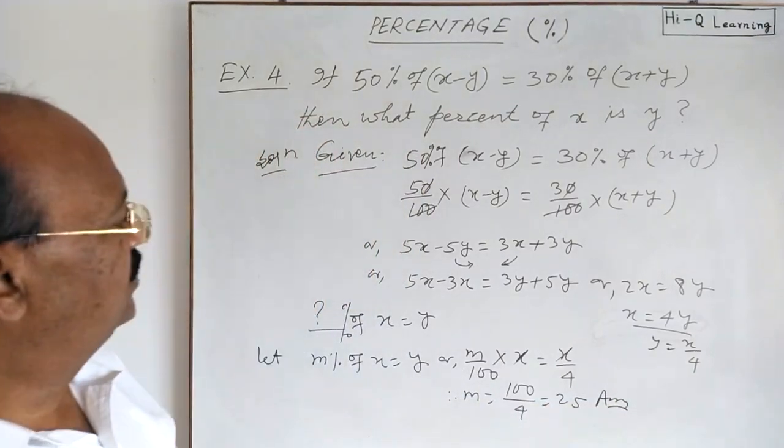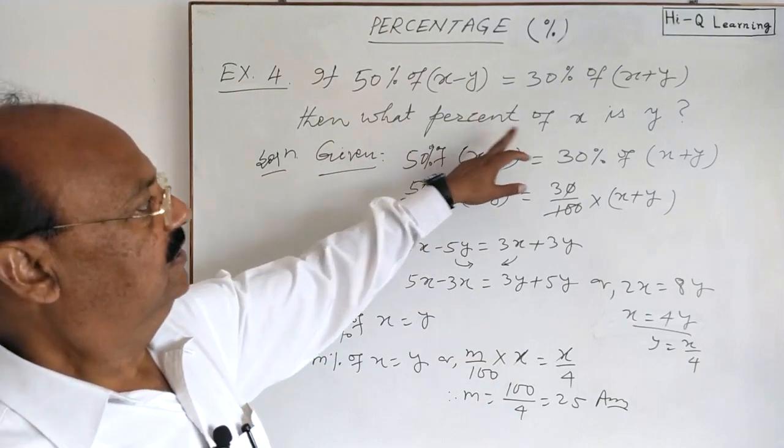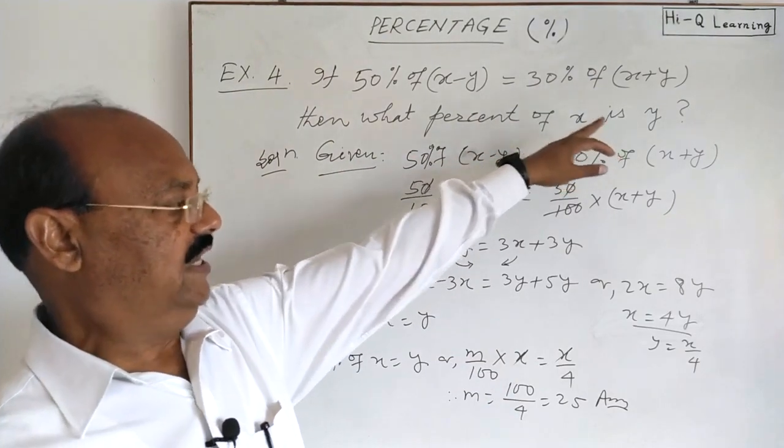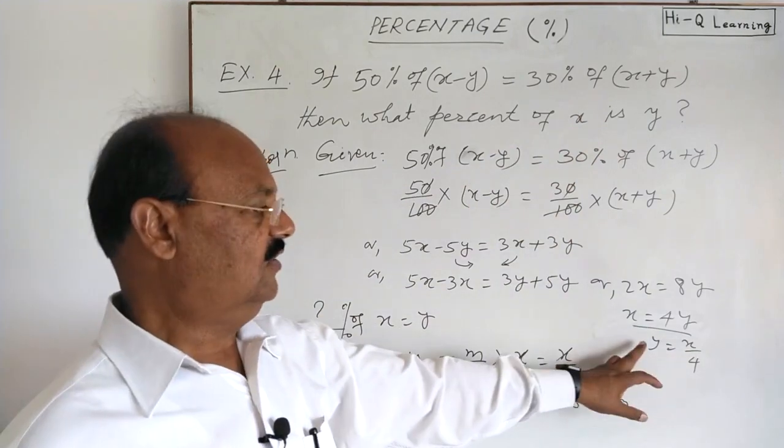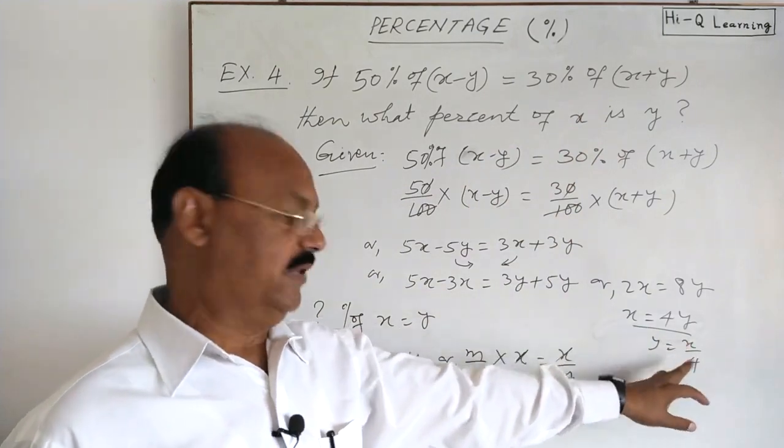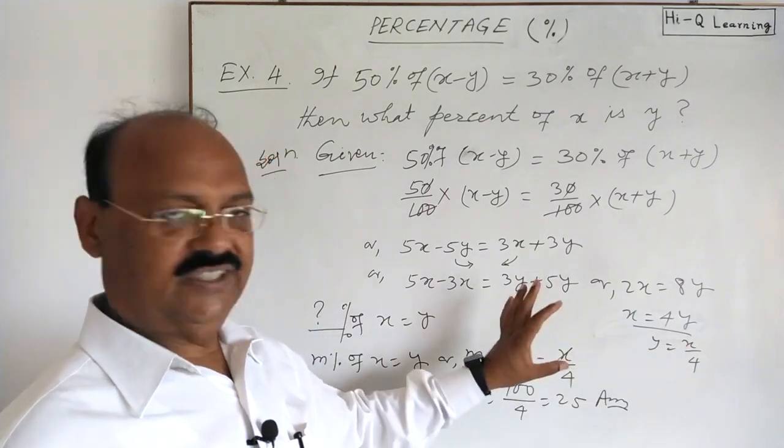So, we come to the conclusion that 25 percent of x is y as x is equal to 4y or y is equal to x by 4. So, the answer is 25. Hope you got it.